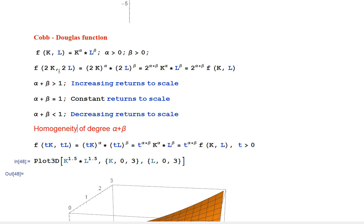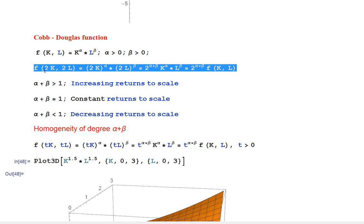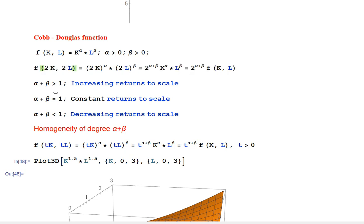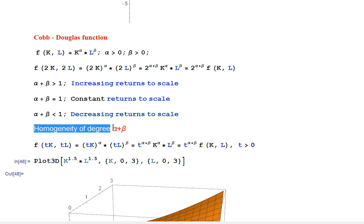But right now I want to look at a generalization. Here we simply doubled the inputs, but we can ask a more general question: what happens if we scale the inputs by some parameter t? We take some positive parameter t and consider scaled inputs tK and tL. Repeating the same algebra, we pull out t to the power alpha and t to the power beta, giving a factor of t^(α+β) in front of the production function.